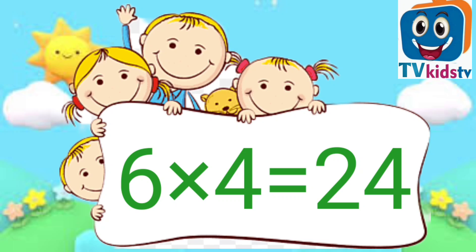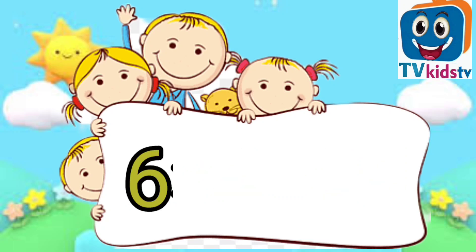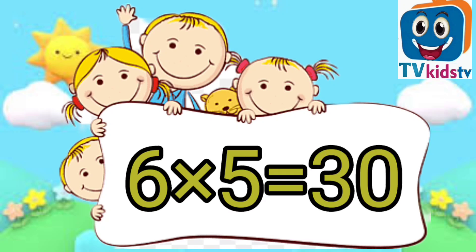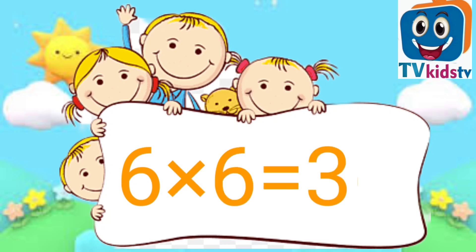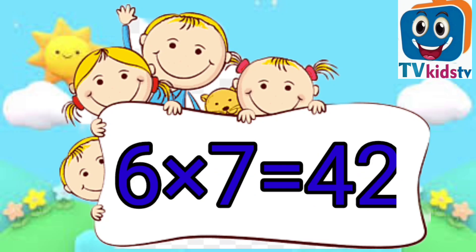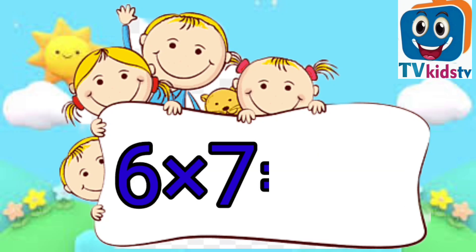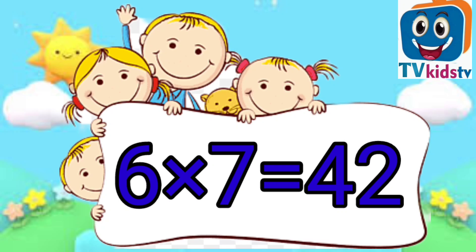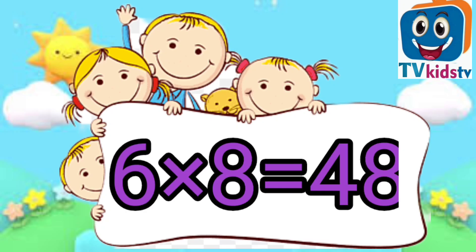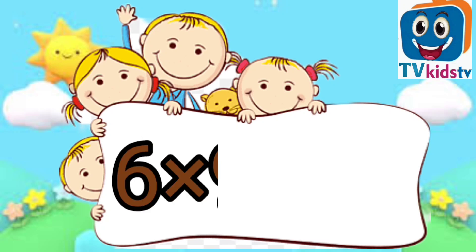Six threes are eighteen. Six fours are twenty-four. Six fives are thirty. Six sixes are thirty-six. Six sevens are forty-two.